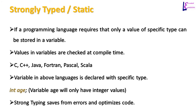A strongly typed or static language requires that only a value of a specific type can be stored in a variable. In these kinds of languages, values in variables are checked at compile time. If a variable has no data type specified for it, the compiler will throw an error.